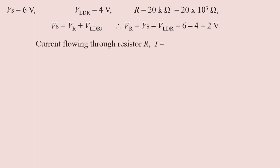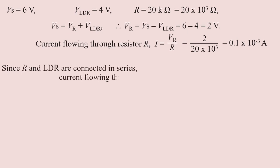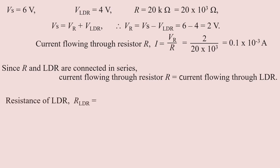The current flowing through the fixed resistor is I equal to VR divided by R. Since R and LDR are connected in series, the current flowing through the resistor R is equal to the current flowing through the LDR. Therefore, the resistance of the LDR can be calculated using VLDR divided by I.